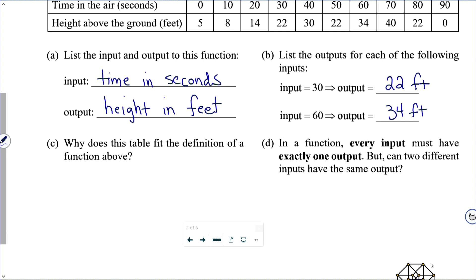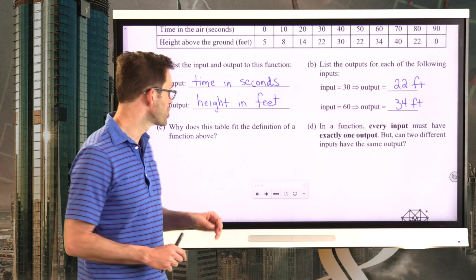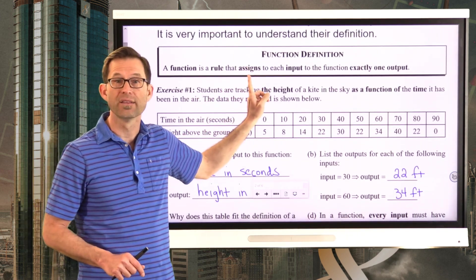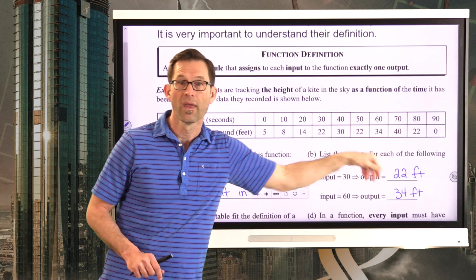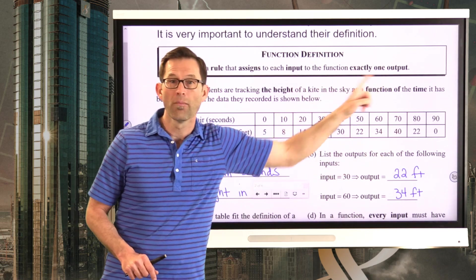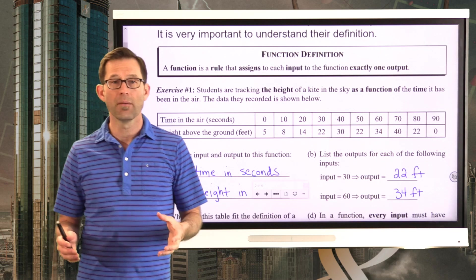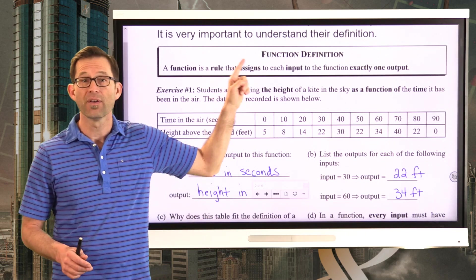Why does this table fit the definition of a function above? In other words, we looked at the definition of what a function was. A function is a rule that assigns to each input, those are the times, exactly one output, those are the heights. So why does this table satisfy the definition of a function?